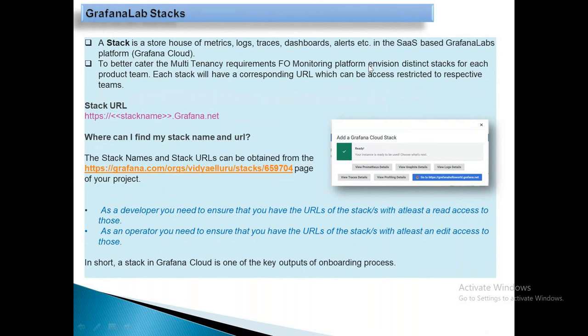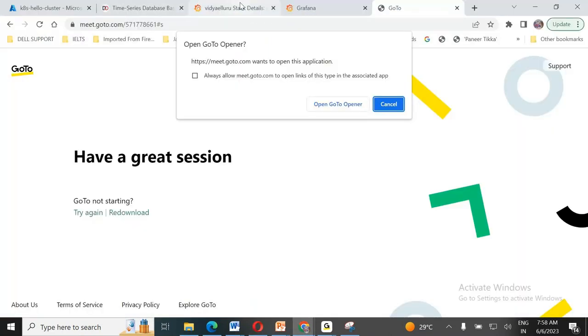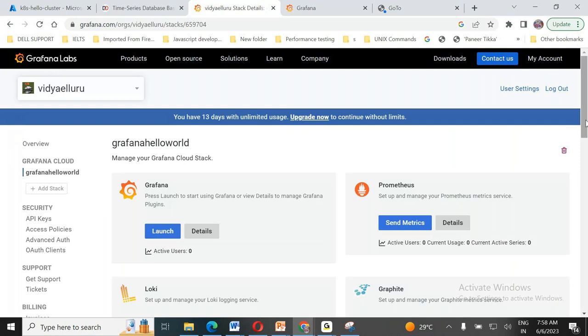The stack URL is identified by using the stack name. For the dev team, it would be something like ishadevteam.grafana.net, and for production it would be foprod.grafana.net. Based on that, certain rules, users, roles, and groups will be created, pertaining to the relevant team so they can go ahead and access that. This is where you can find those stacks and URLs - and this will take you to the particular cloud.